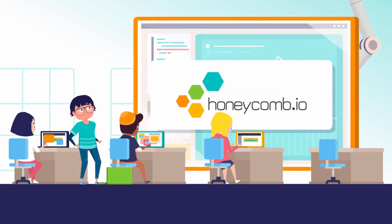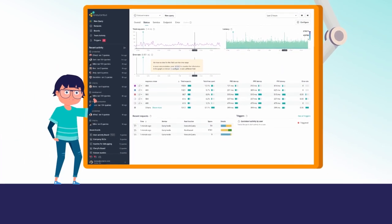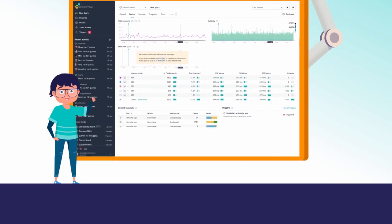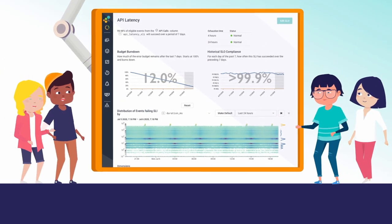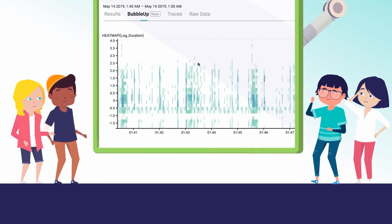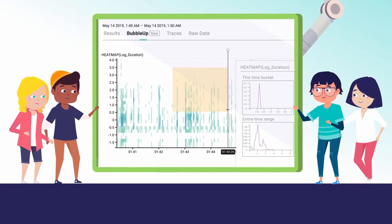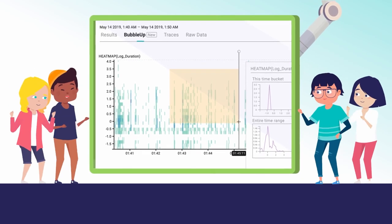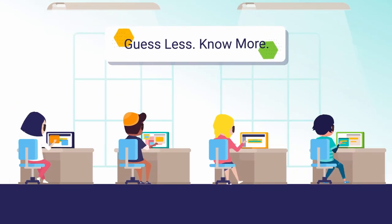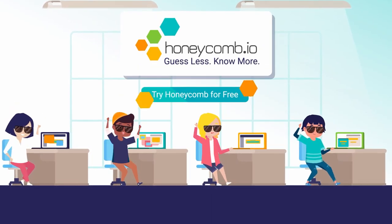Honeycomb allows you to capture any event inside your code. Compare raw events across any number of dimensions. Find every needle in the haystack, no matter how deep or hidden. Observability helps developers see how their software really behaves in production. With Honeycomb, you don't have to guess. You know. Sign up today and try Honeycomb for free.